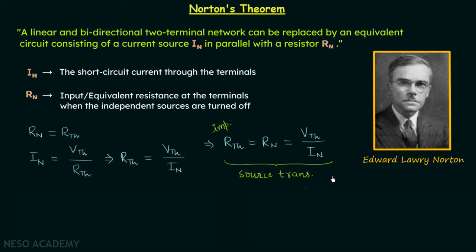Moving on to the next point: we need to understand what to do with independent and dependent sources in Norton's theorem. While calculating Rn, we turn off the independent sources but leave the dependent sources as they are. Therefore, the independent sources are treated the same way as in Thevenin's theorem.